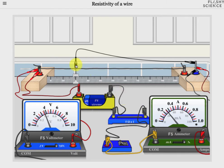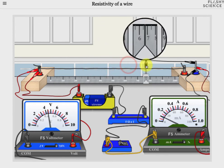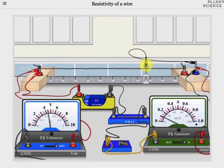The crocodile clip can now be moved to different positions and the potential difference and current recorded at each point. This will allow you to investigate how the resistance of a wire changes with its length. The wire is made of nichrome at the moment, but is of unknown width.